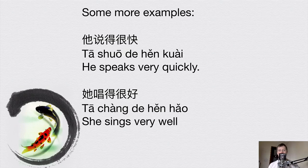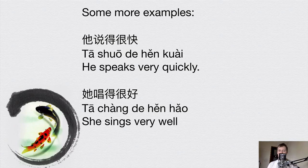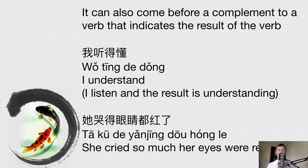Here are some more examples. 他说得很快 means 'he speaks very quickly' — the 'very quickly' gives us more information about the verb 说 meaning 'to speak.' Another example: 她唱得很好 means 'she sings very well.' So 她 is 'she,' 唱 is 'to sing,' 得 is the grammatical particle, and 很好 means 'very well.' This 得 can also come before a complement that indicates the result of the verb.